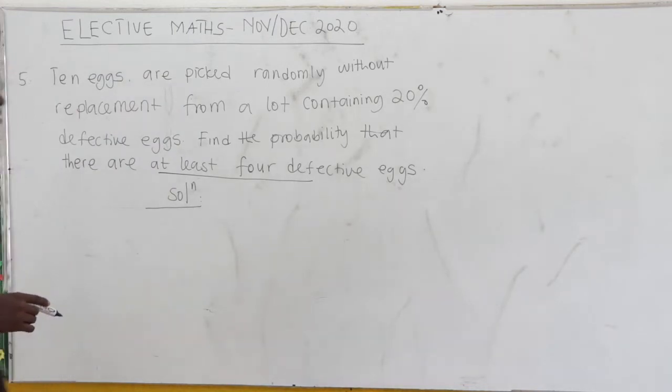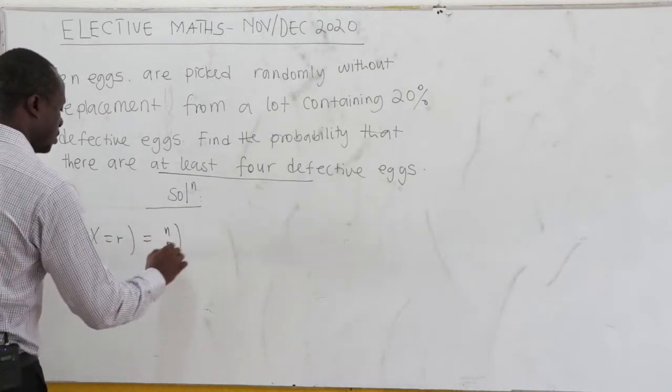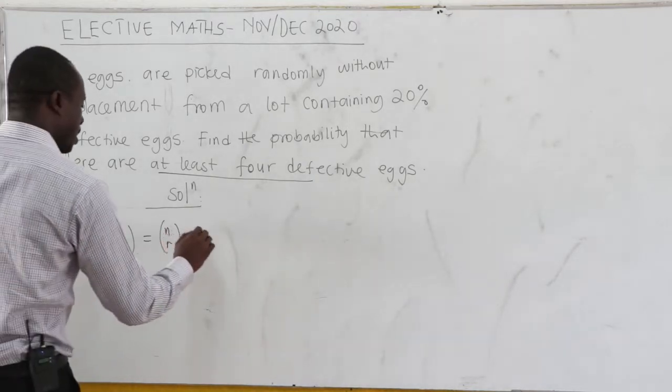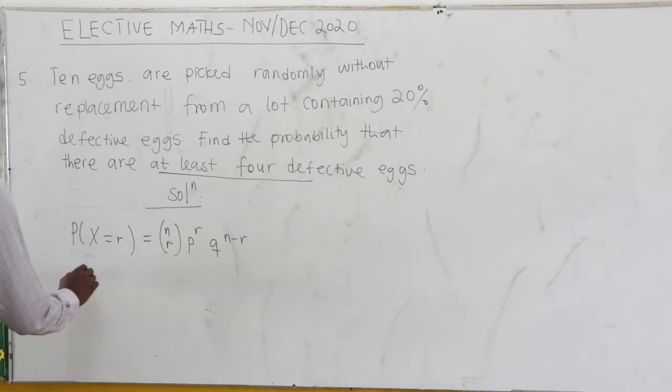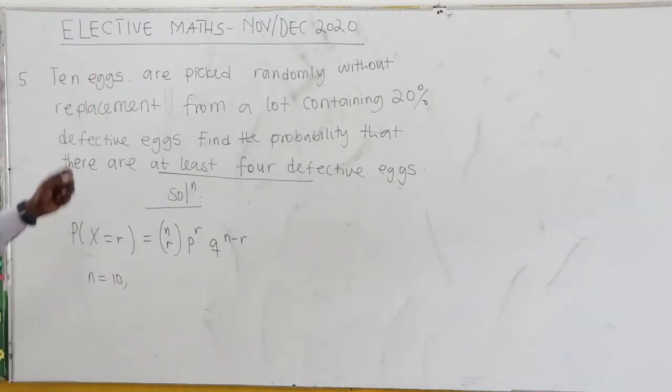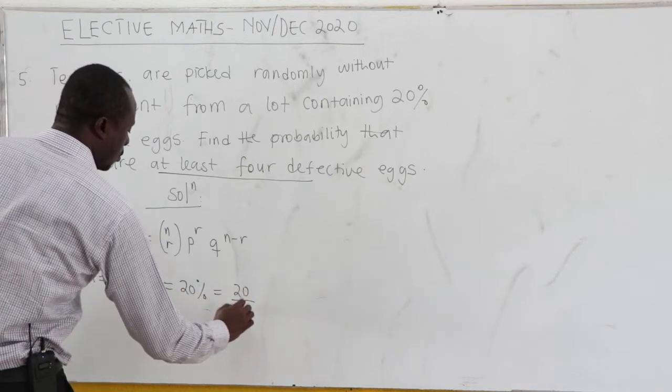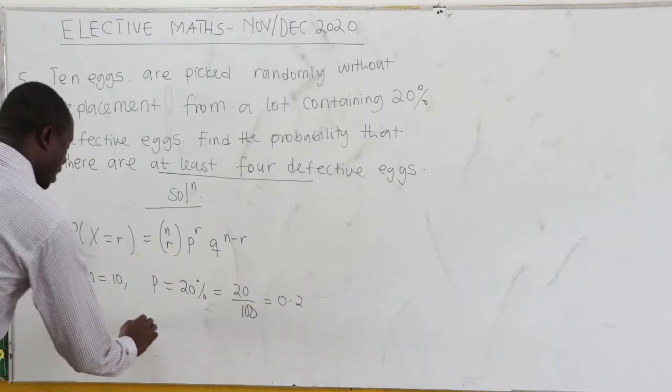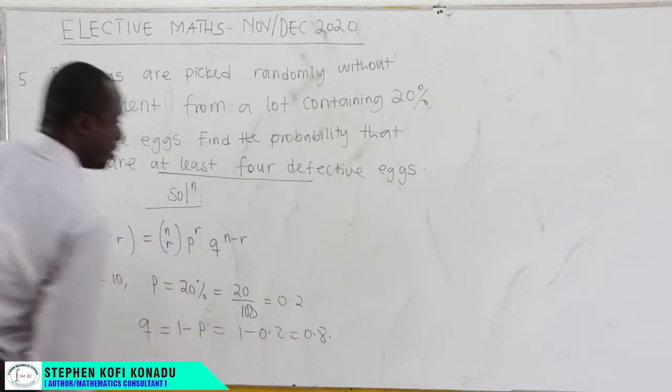This is clearly a binomial distribution question. The binomial distribution function is P(X = r) = nCr × p^r × q^(n-r). Now, q is the same as 1 minus p. Ten eggs are picked randomly, so n = 10 from a lot containing 20% defective. So clearly p = 20% = 20/100 = 0.2. Now, q = 1 - p = 1 - 0.2 = 0.8.